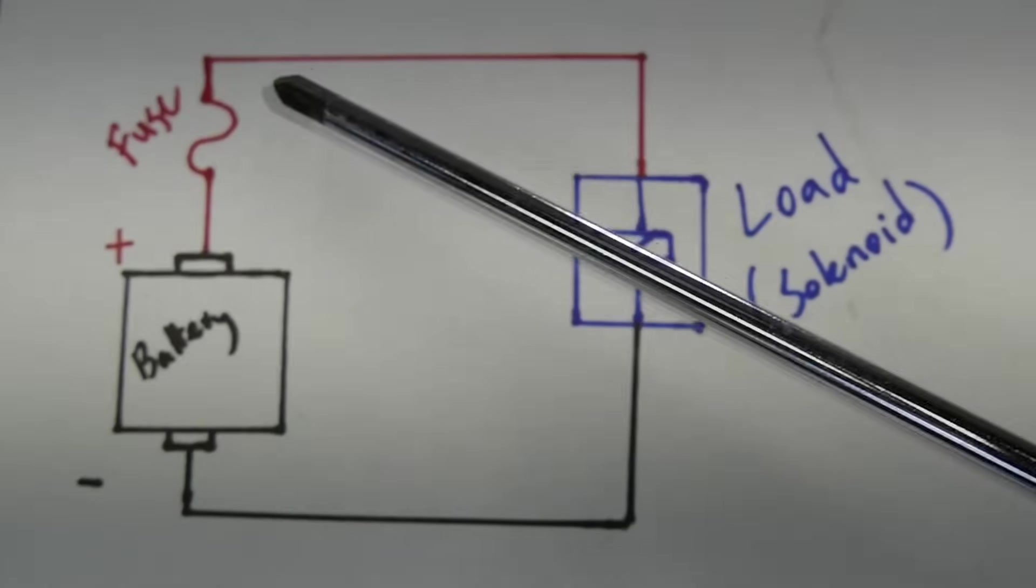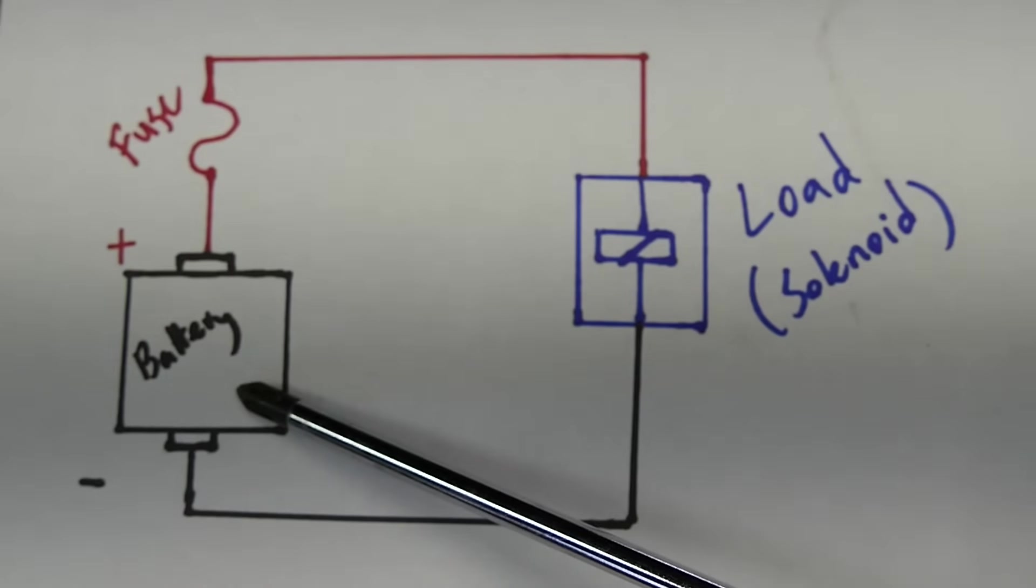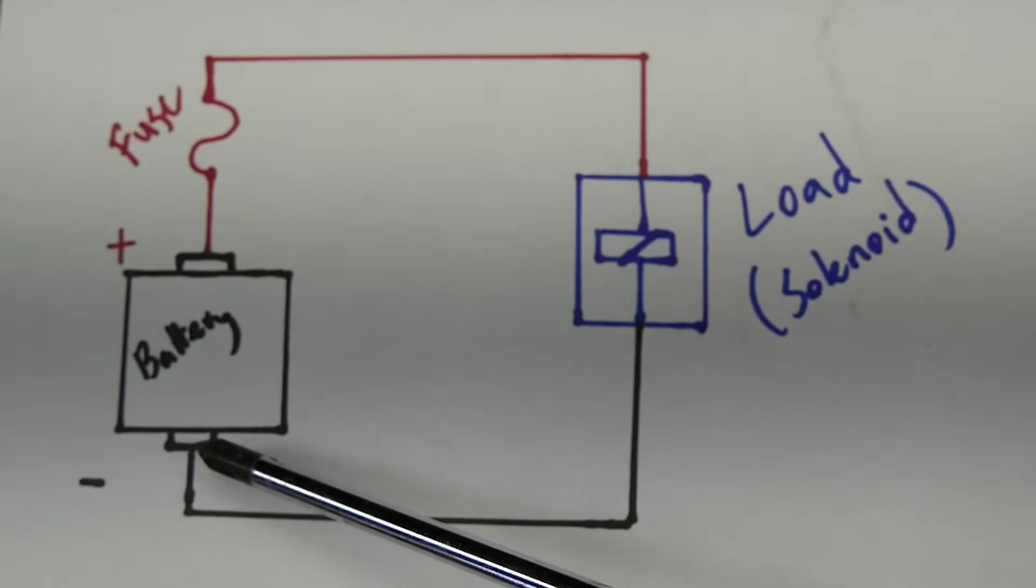Alright, so first we'll start with a very basic circuit as an example. So obviously you need the power source, which is going to be the battery on your car. Then you've got your positive side and the negative side.